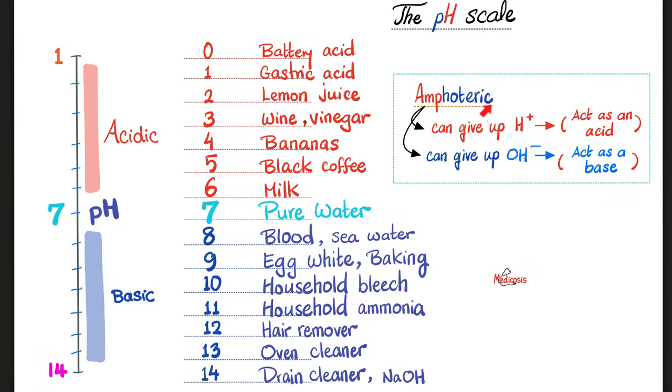What's an amphoteric? An amphoteric is like an amphibian. I can live on land, I can live in sea. So, an amphoteric is something that can act as an acid by giving us protons and can act as a base by giving us hydroxide ions.